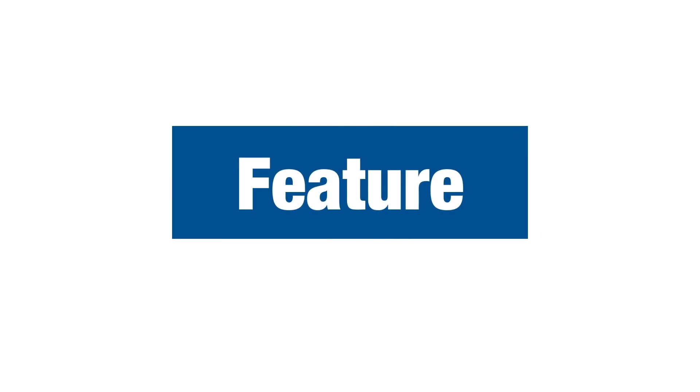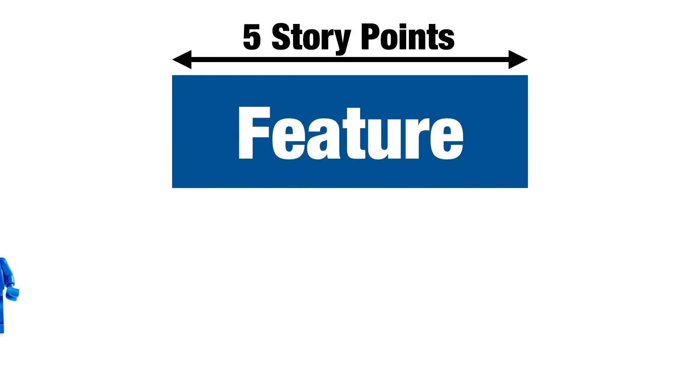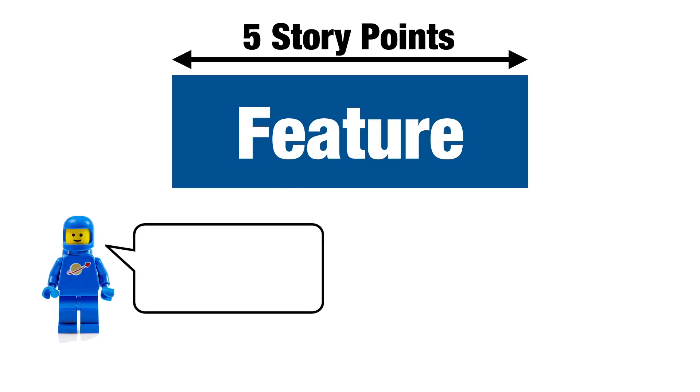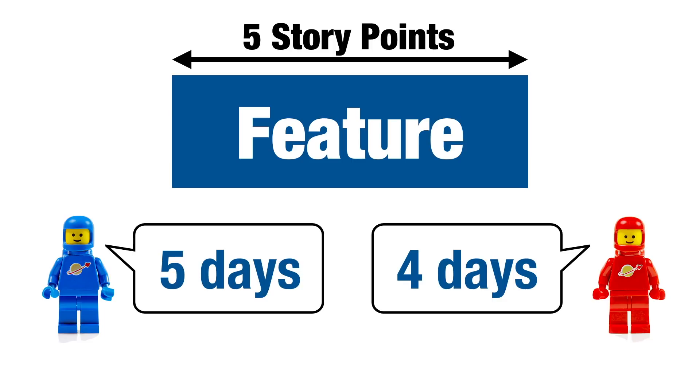Enter the star of today's show: the story point. Story points, as the name suggests, are used to indicate the size of a story — or, if you prefer, a feature, a task, or a general piece of work. Story points share some of the properties of the transmutable things we looked at earlier. If one particular story or feature is five story points in size, then we can each apply our own personal transmutation. For example, I might think I could complete the five-story-point item in five days, while a more gifted colleague might think she could complete the same five-point story in four days.